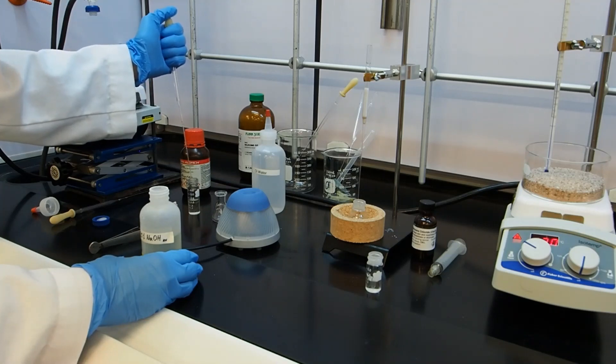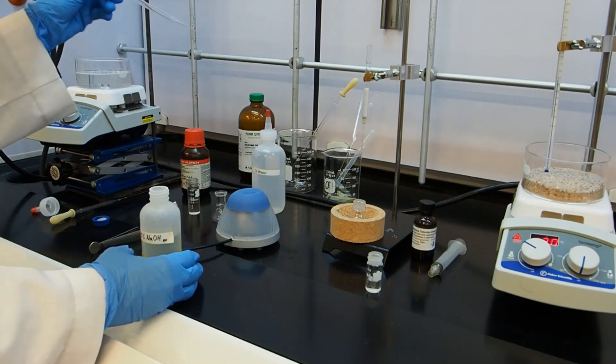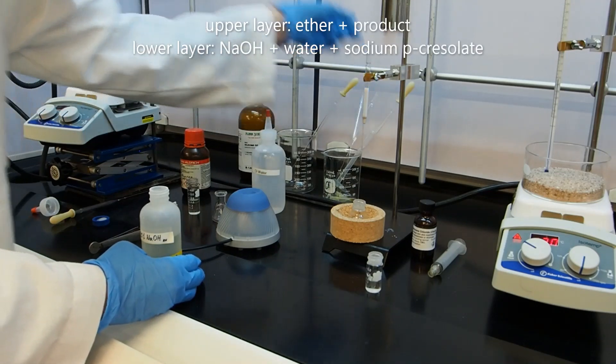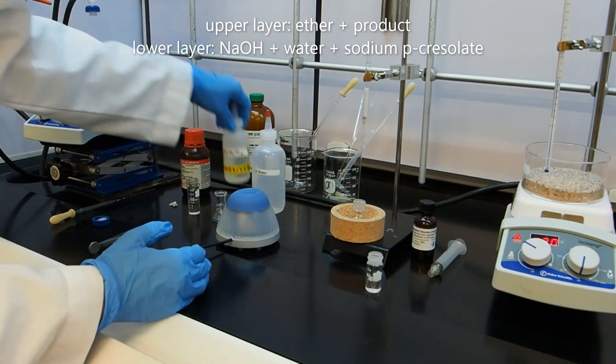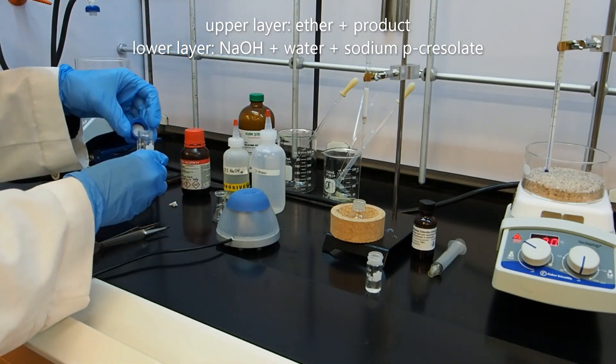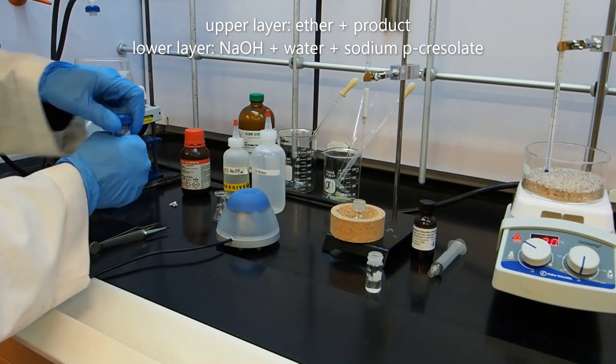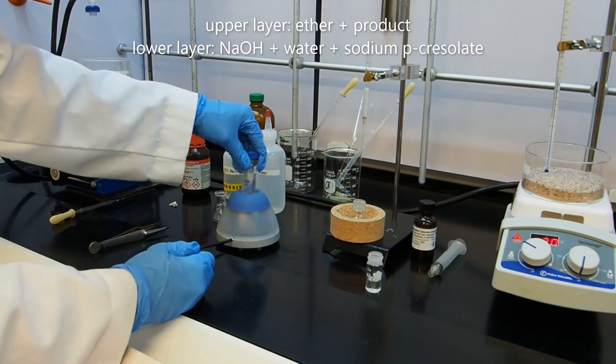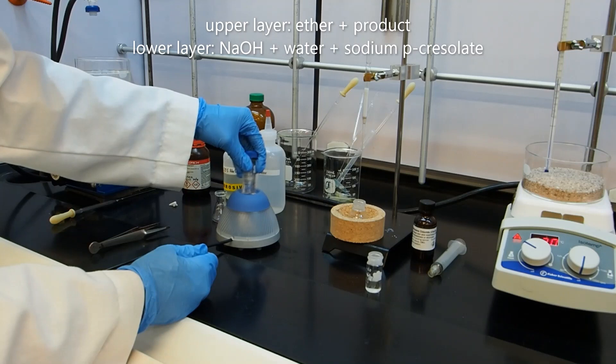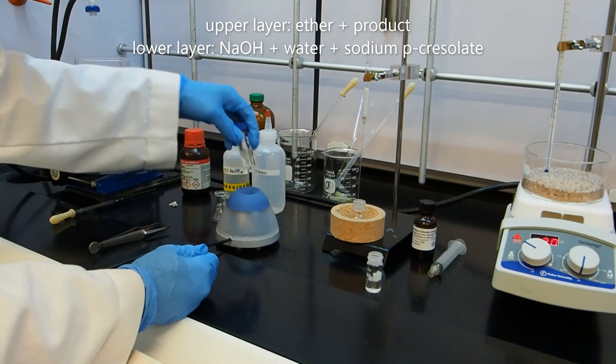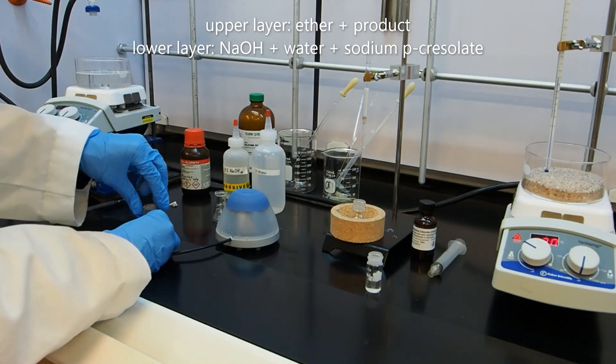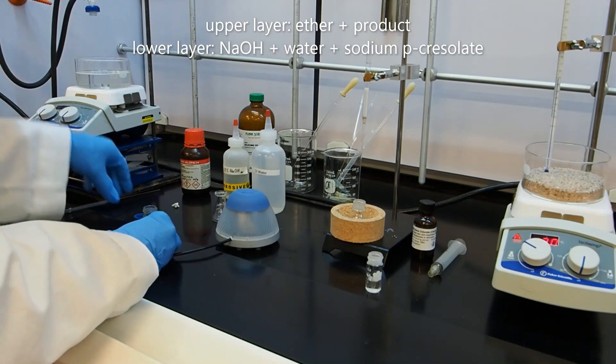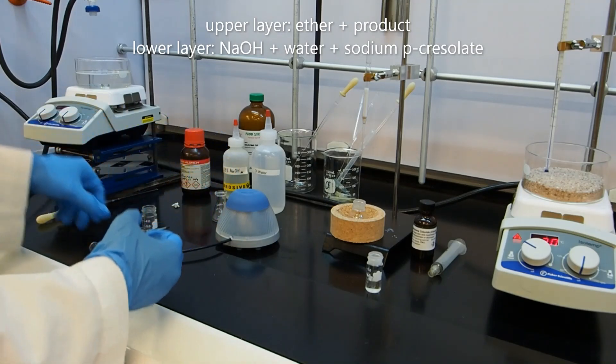The point of this is to remove any unreacted paracresol. It is acidic because it's a phenol and the sodium hydroxide will pull off that acidic proton and make it an ion, which will then be soluble in water. So I've capped my vial. I'm going to mix the layers really well again. So this is part of isolation of the product. We're hoping that when we're done with this extraction procedure, the only thing left in the ether will be our pure product. And honestly, from the TLC, I didn't see that much paracresol left in the reaction, but we want to be sure.